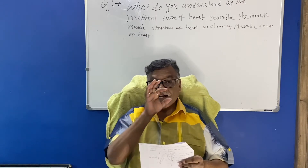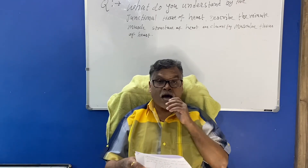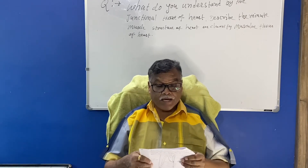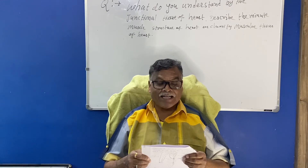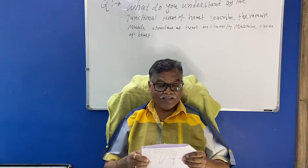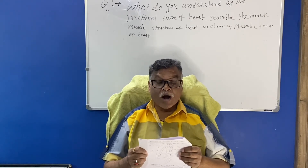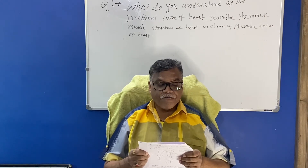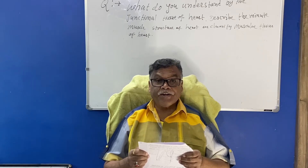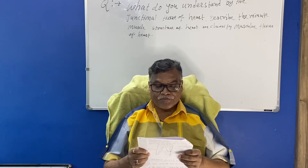Now give the heading: Muscle Structure of the Heart. It is composed of longitudinally striated quadrangular fibers also showing faint transverse striations.